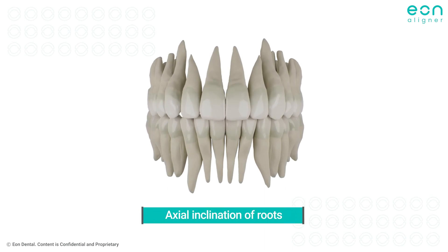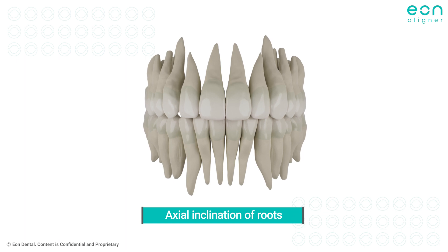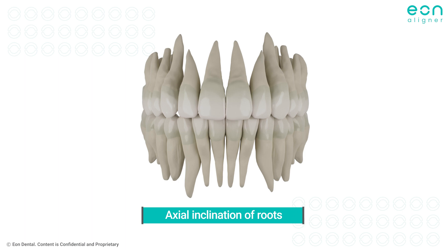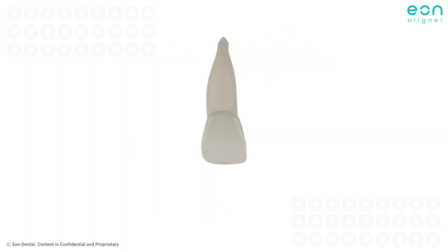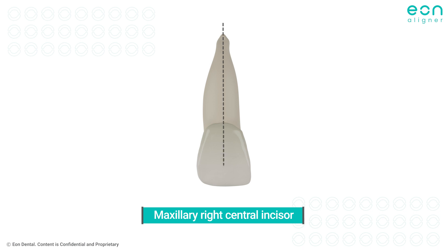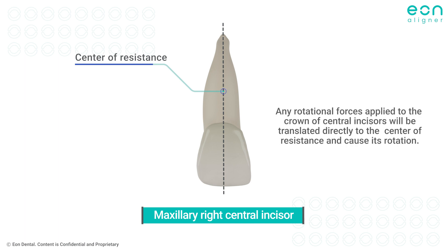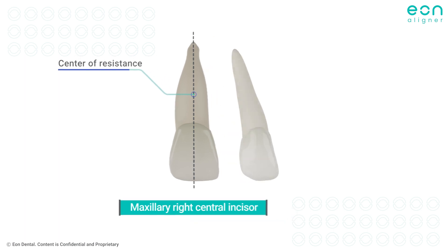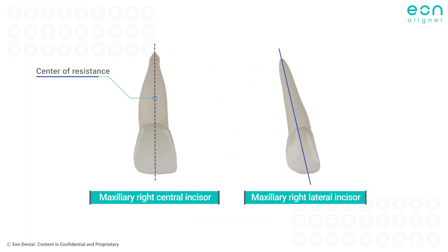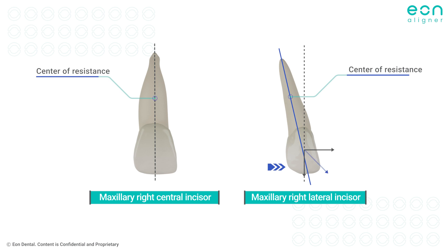The third contributing factor that commonly introduces complexity specifically to the rotation of the lateral incisors is the axial inclination of their roots. Notice how in the central incisor, the root and center of resistance are located directly above the crown, so rotational forces applied to the crown translate directly to the center of resistance. Unlike the lateral incisors, where the root exhibits a distal tipping of a few degrees, causing the crown to not align directly beneath the root or center of resistance — so the net vector of forces will not pass by the center of resistance and no favorable rotational response will be noticed.